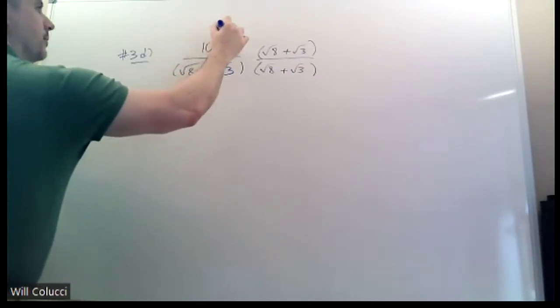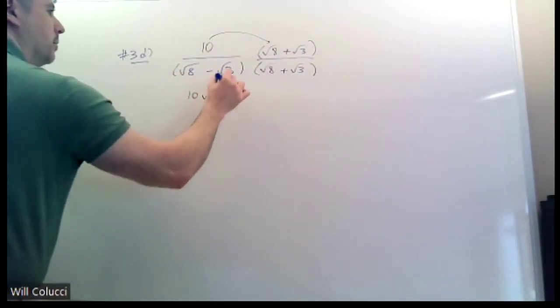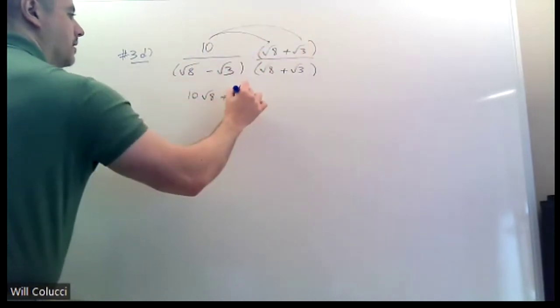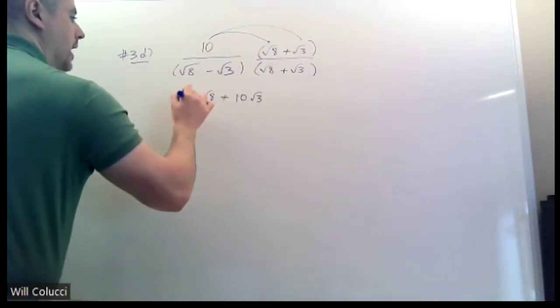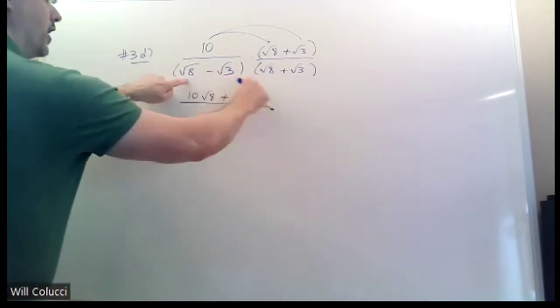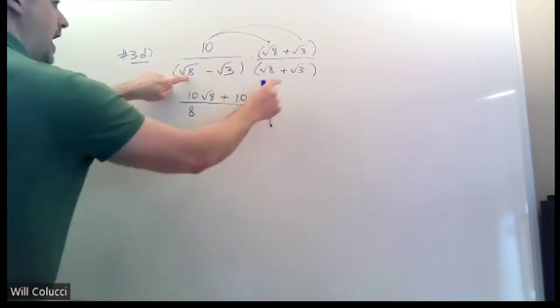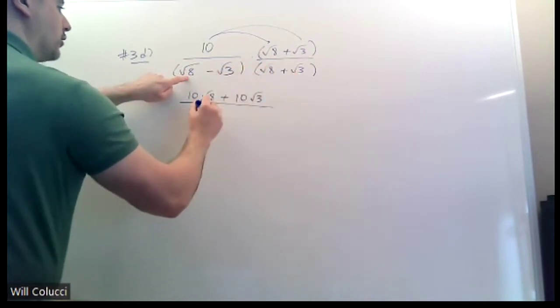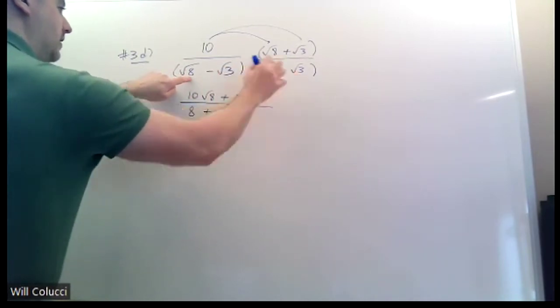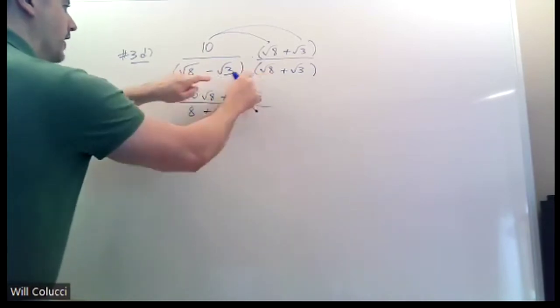Now, on the top, you're going to get 10 radical 8 plus 10 radical 3. That's all you can do. Just multiply them each by 10. The bottom is a lot harder. You've got to FOIL this out, so you have to be very careful. Radical 8, radical 8 is radical 64, which is 8. Radical 8 times a positive radical 3. They're both in jail. 8 times 3 is 24. So you get radical 24.